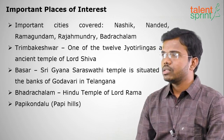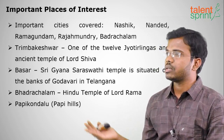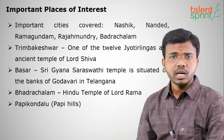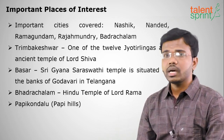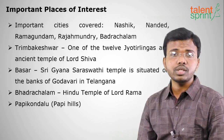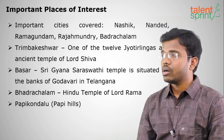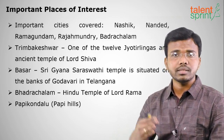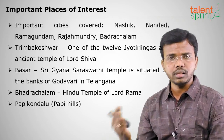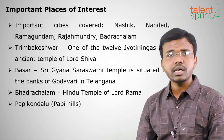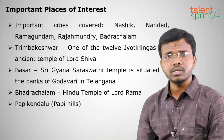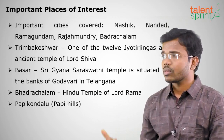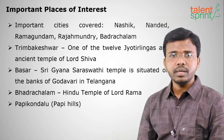Important cities along the course of the Godavari are Nasik, Nanded, Ramagundam, Rajamandry, and Badrachalam. Notable sites include Triyambakeshwar, one of the 12 Jyotir Lingas dedicated to Lord Shiva; Basara's Shri Gnana Saraswati Temple in Telangana; and the Badrachalam Temple in Telangana, dedicated to Lord Rama.